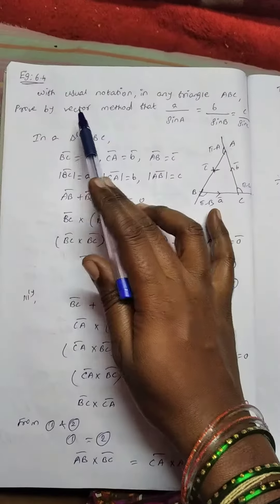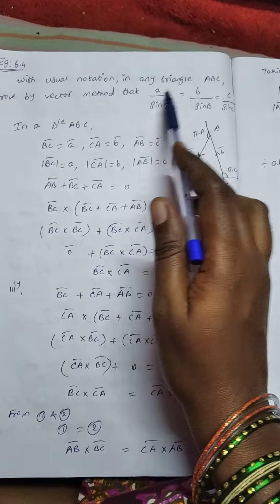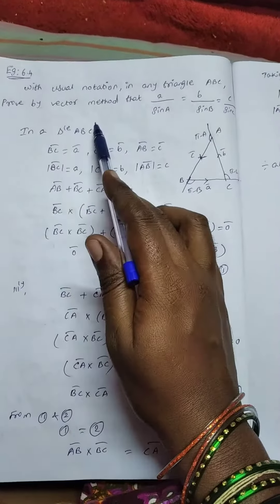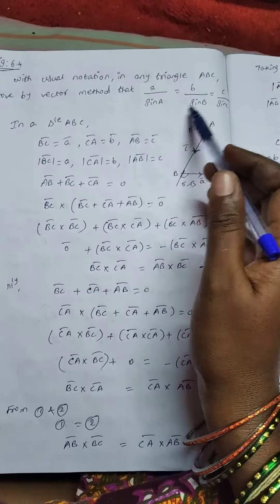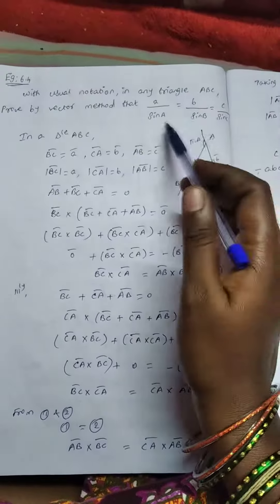Happy morning students. Example 6.4: With usual notation in any triangle ABC, prove by vector method that A by sine A equals B by sine B equals C by sine C.